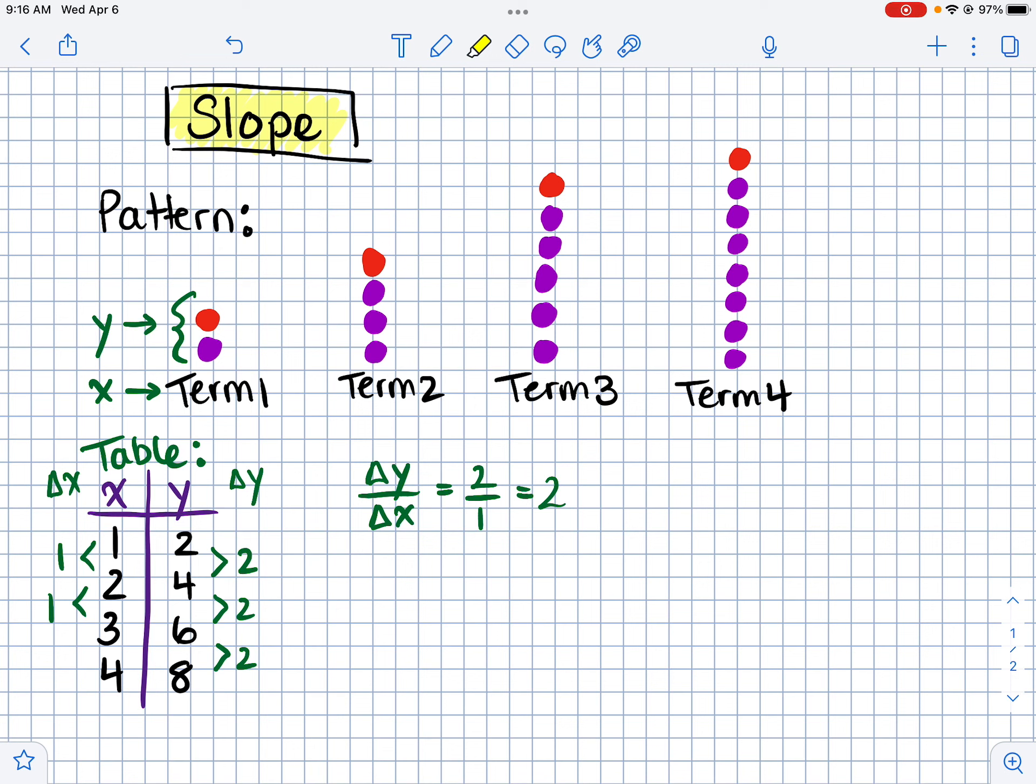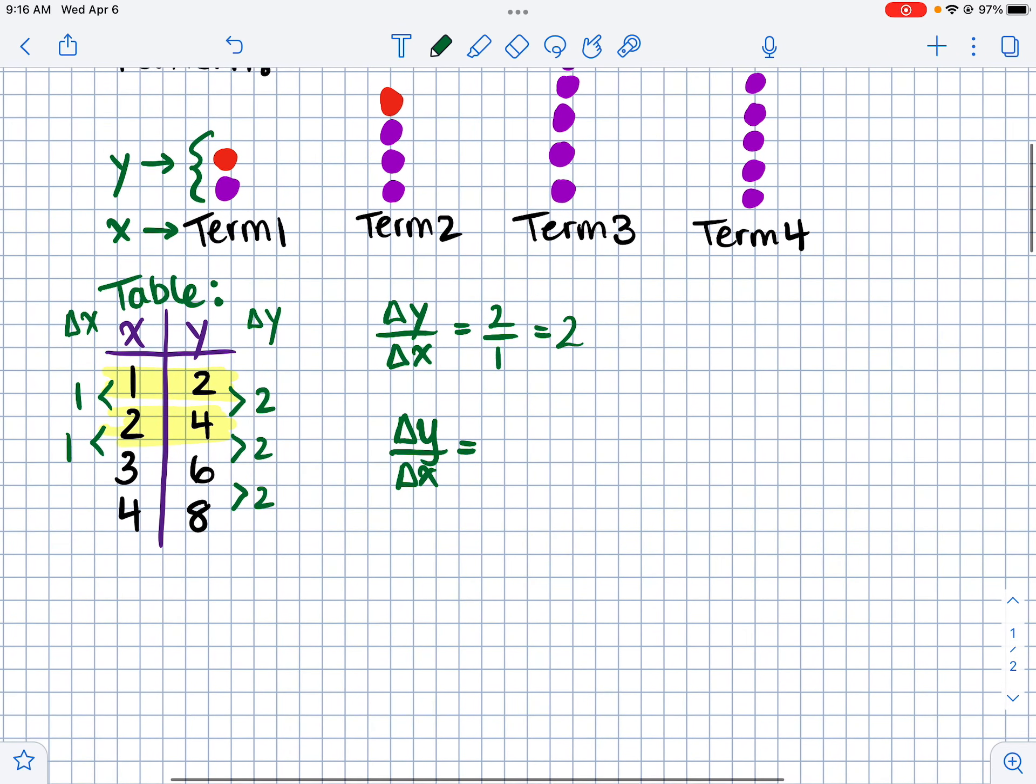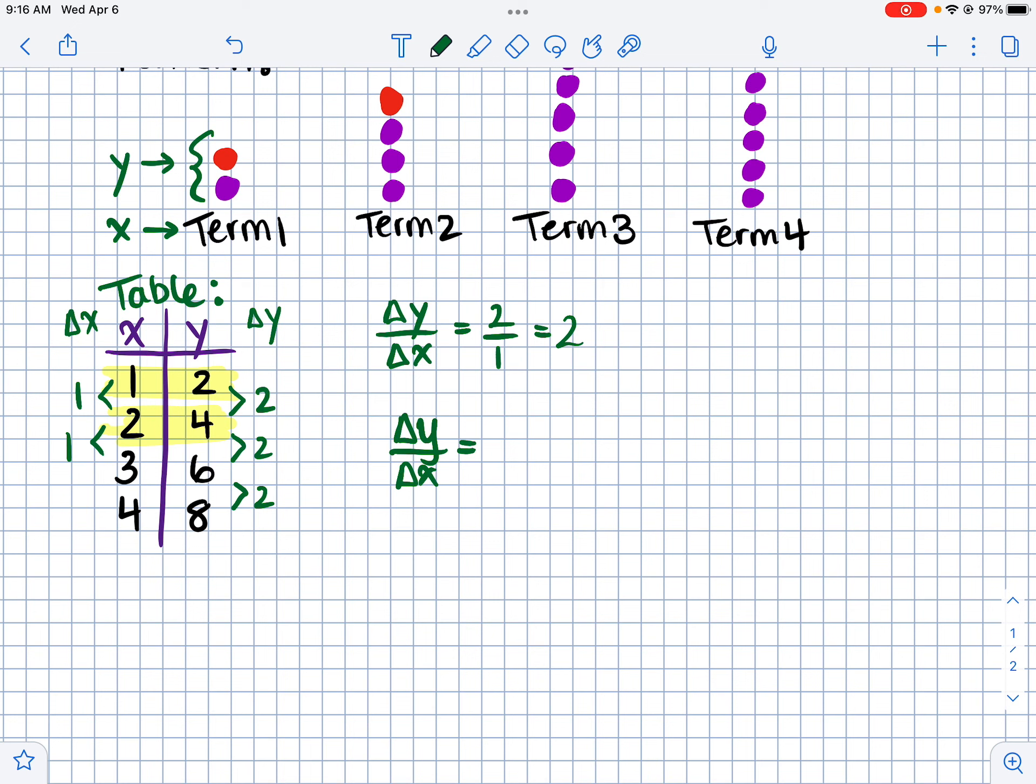Another way to look at rate of change or slope is, you could actually pick just two points to determine the change in y over the change in x. So let's say I chose, like, this point, and the next point. Say I picked two points. I could use a formula that looks like this. I know this relation is linear. So to find the change in y over the change in x, I could just use two points to determine the rate of change, or the slope.